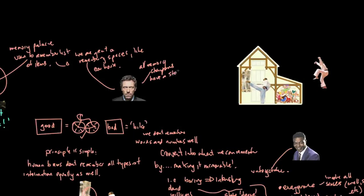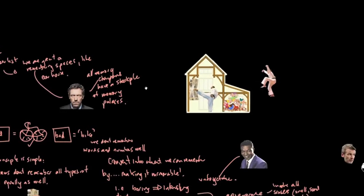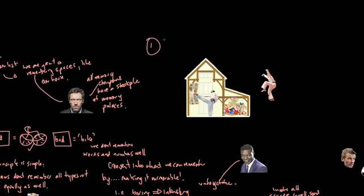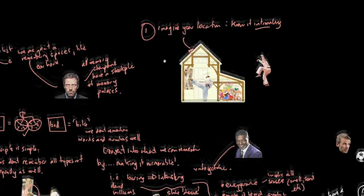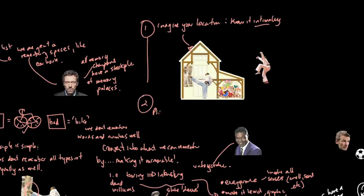All memory champions have a stack, a stockpile of memory palaces. They're locations that you know intimately. They might be your childhood house. They might be your primary school. And you know them well. You learn them. And the brain remembers those spaces much better than others. So what you do with this technique is you imagine your location, know it very well intimately, walk through it, and then you place the items about the house that you need to remember.